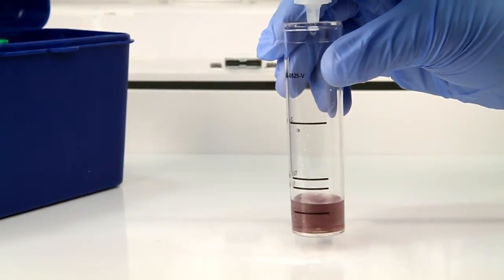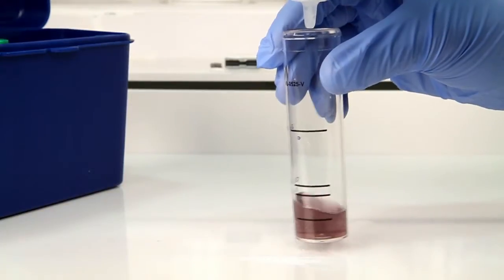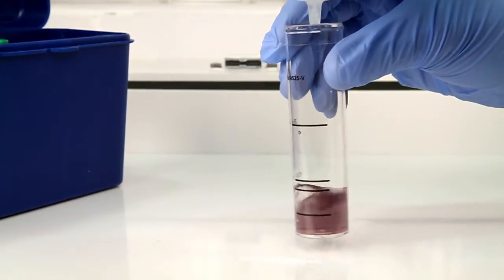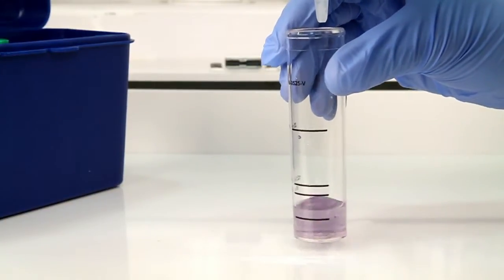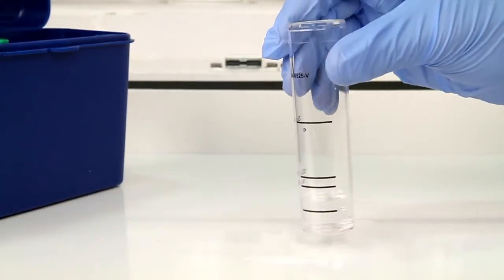After the addition of each drop of titrant, swirl the vial to make sure the sample is properly mixed. Count the number of drops during this step. The titration is complete when the sample turns from blue-black to colorless.